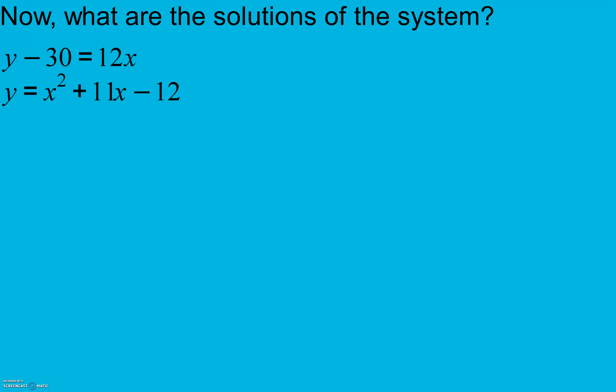Now feel free to pause and give this a try if you'd like. Again, I'm going to use substitution. And I already know what y equals: y equals x squared plus 11x minus 12. So I'm going to substitute that into y in my opposite equation. Y equals this x squared plus 11x minus 12, and the rest of my equation I'm going to keep exactly the same.